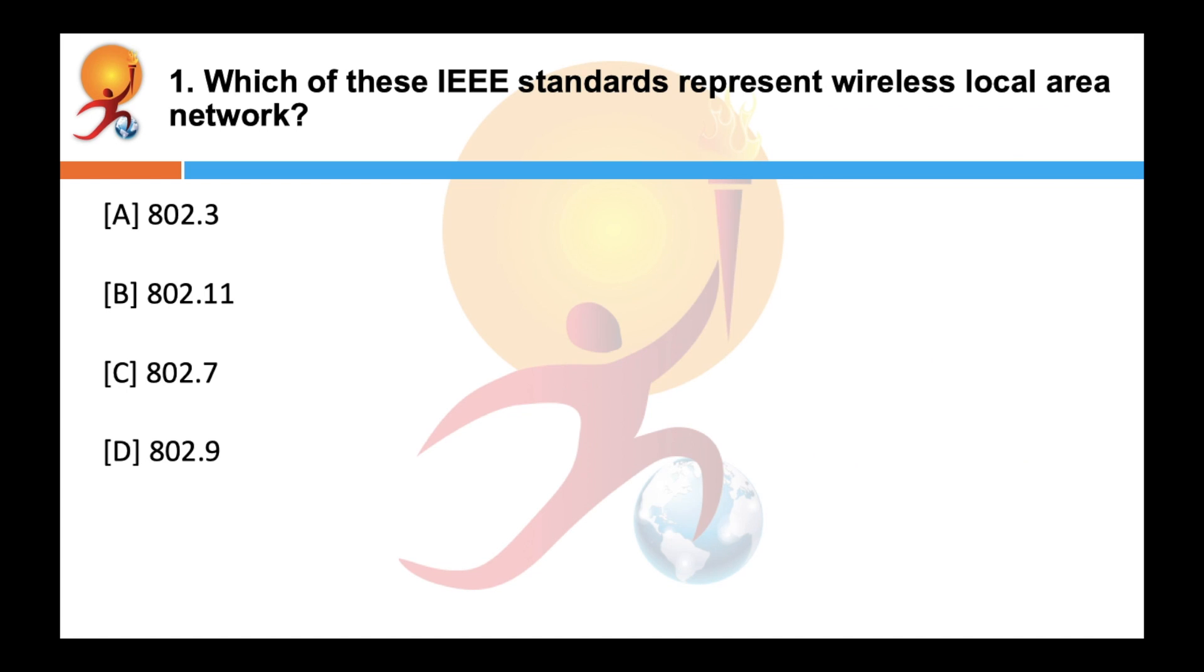Which of these IEEE standards represents wireless local area network? Correct answer is B. The IEEE 802.11, which is part of IEEE 802 set of LAN protocols, defines the standards for implementing the wireless local area network.